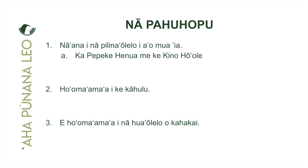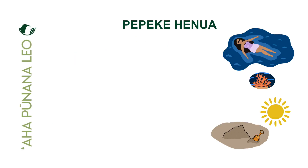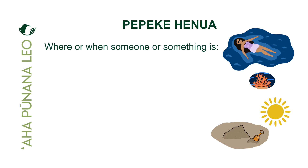Oya maika'i, lua e ho'omaka kākou. Let's begin. All right, so we can see here we have our lovely images, and at the top we have our pepekehenua. We use the pepekehenua to express where or when someone or something is located.